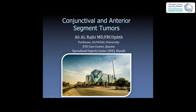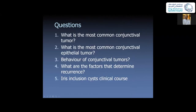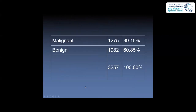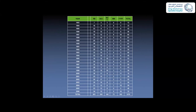This lecture covers conjunctival anterior segment tumors. Key questions include identifying the most common conjunctival epithelial tumor, discussing the behavior of conjunctival tumors, and factors that determine recurrences, as well as iris inclusion cyst clinical course. The proportion of malignant versus benign conjunctival tumors is 40 to 60%. According to KKH statistics, the most common malignant tumor is retinoblastoma; however, the most common one affecting the conjunctiva is squamous cell carcinoma.